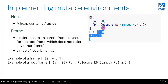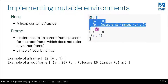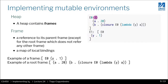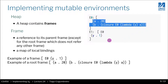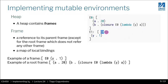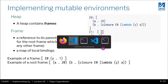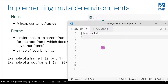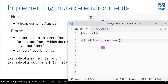This frame connects to E0 and this frame connects to no one. So we know there are at least two things we need to store in a frame: one is this hash table, and the other is possibly the parent. Let's define a struct and call it frame. We want a parent and we want vars, which are the variable bindings.